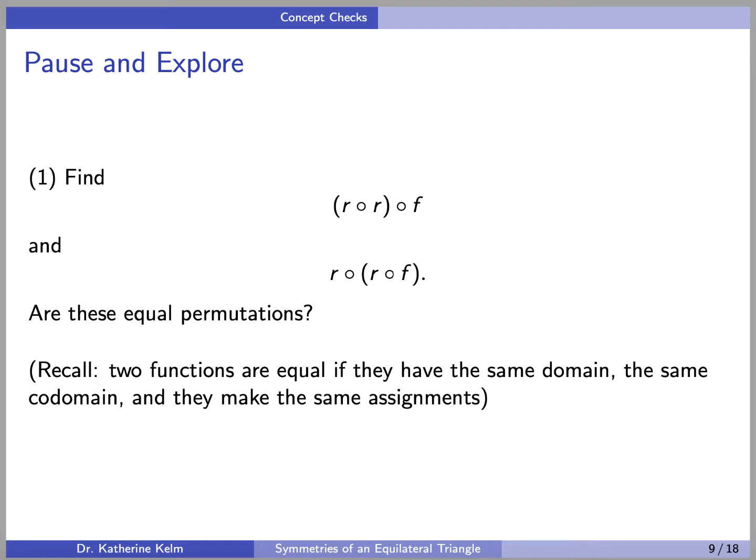So the first question is, find R composed with R composed with F, and R composed with the quantity R composed with F. And are these equal permutations?